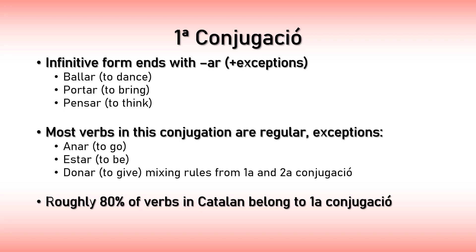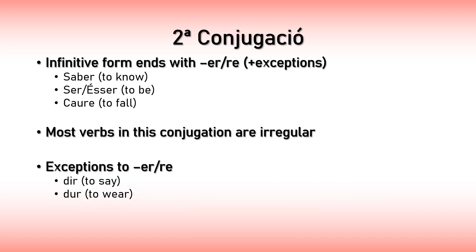If you pick a verb as a model and learn all the conjugations and tenses for it, then you know the rest. That is my first advice with learning verbs, because I know it's the worst part when you're learning a Romance language. For the second conjugation, as I said, it ends with ER or RE. The examples are saber (to know), ser or ésser (to be), and caure (to fall). The difference between ser and ésser is that ésser is only found in literature, so you will basically always use ser.